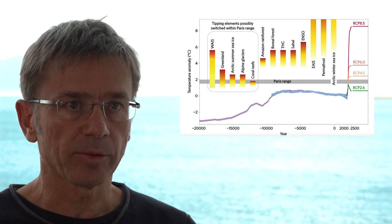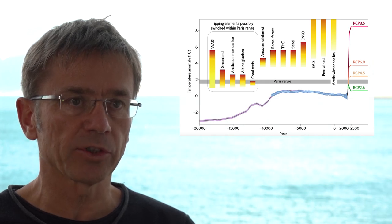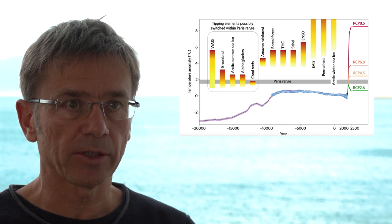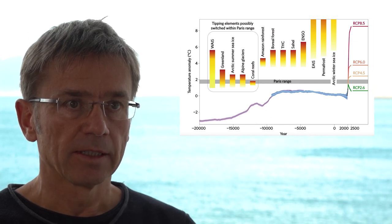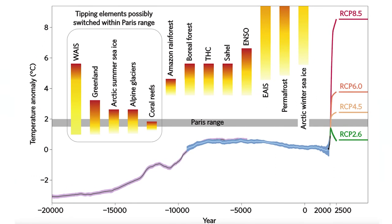If you look at this diagram, you first see at the bottom part a curve showing the global temperature since 20,000 years ago until the present. This can be derived from sediment cores, ice cores, and other data sources that tell us about past temperatures. And there you see how temperature has increased from 20,000 years ago, which was the height of the last ice age, into the Holocene that started around about 10,000 years ago.